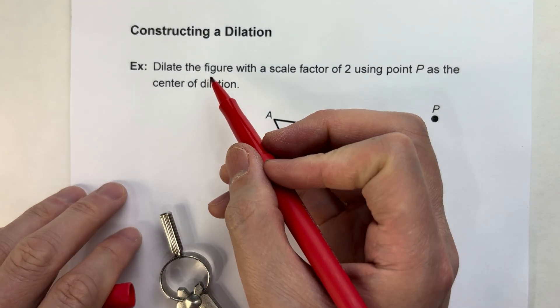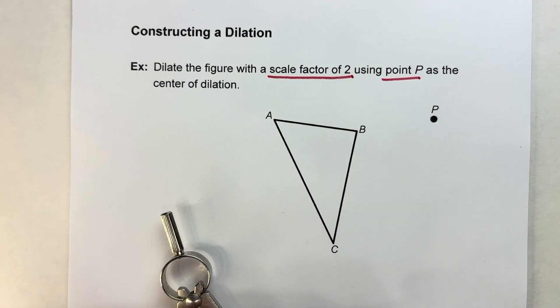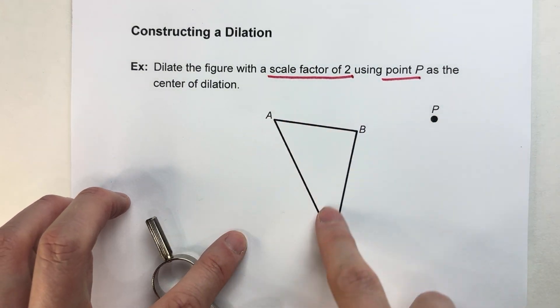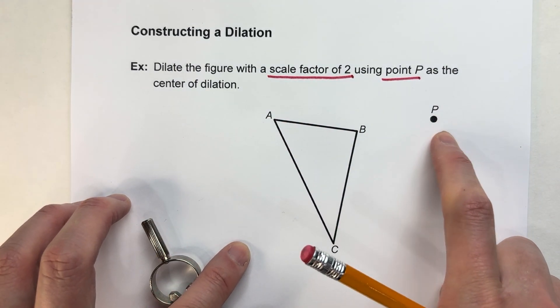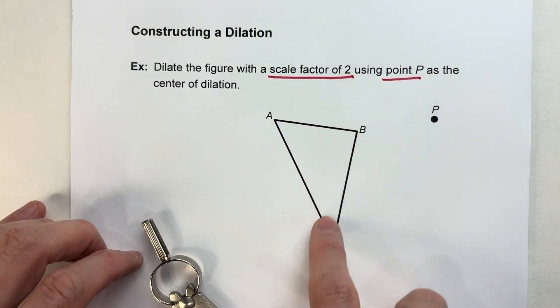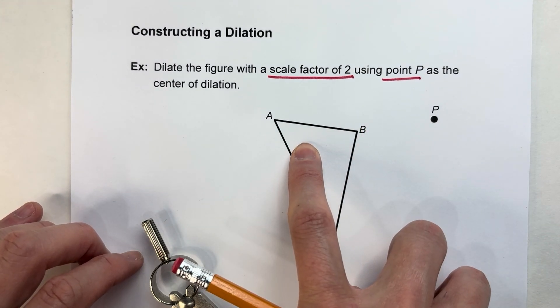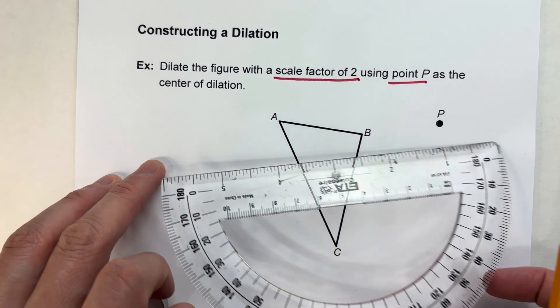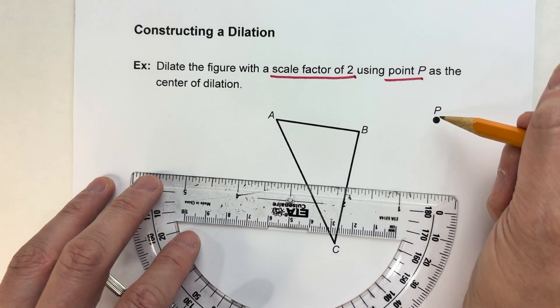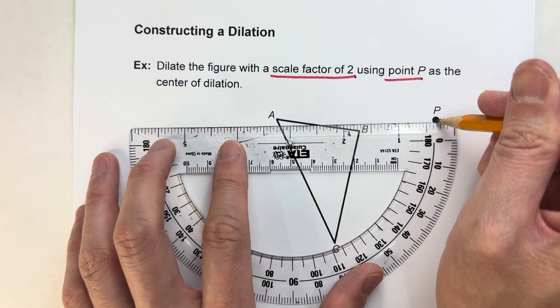This first one says we're going to dilate the figure with a scale factor of 2 using point P as the center of dilation. So here's my triangle, here's point P. We're going to stretch it away from P, so each one of these points is going to be twice as far away from P as it currently is. The way we do that is first we draw the path of each point from that point P.